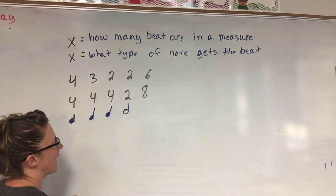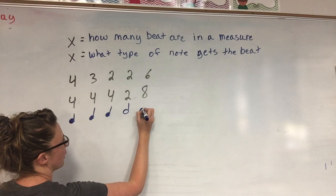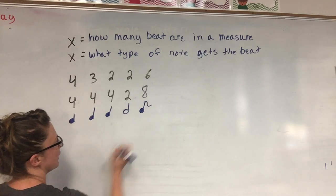So the two on the bottom is a half note getting the beat, and then the eight on the bottom is the eighth note getting the beat.